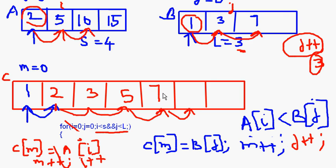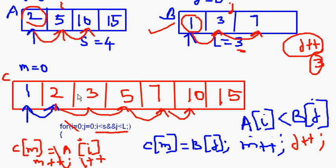So far C has elements 1, 2, 3, 5, 7 — that's five elements placed. The remaining elements are 10 and 15 from array A. Once we come out of the loop, we check which array has elements left. In our case, array B is finished; 1, 3, and 7 are already in C. The remaining elements of array A — 10 and 15 — are appended as-is, since A is already sorted in ascending order. Array C is now the fully merged and sorted array.